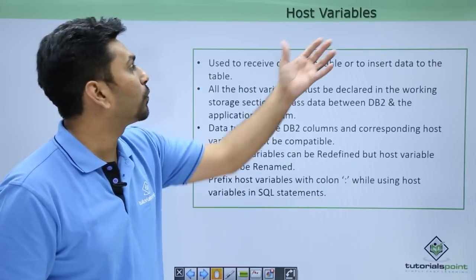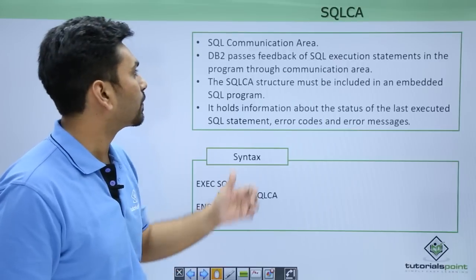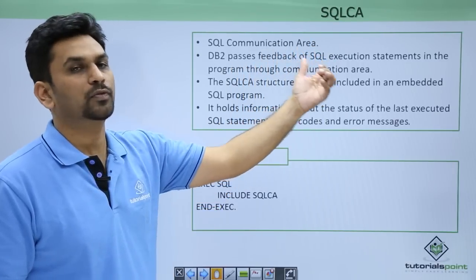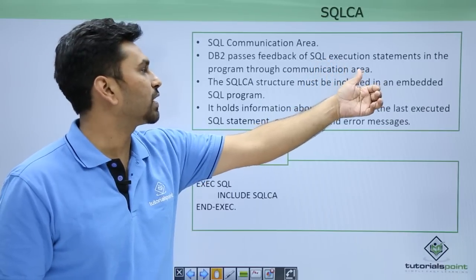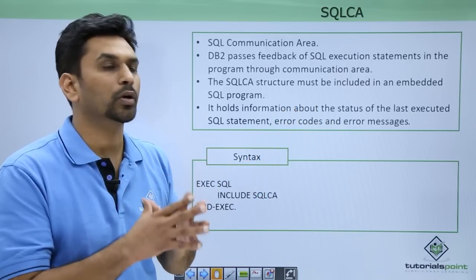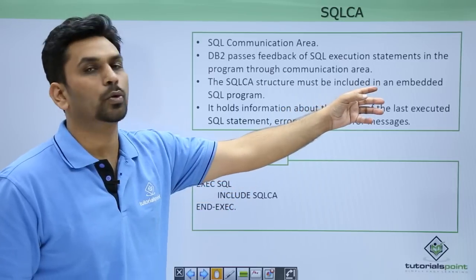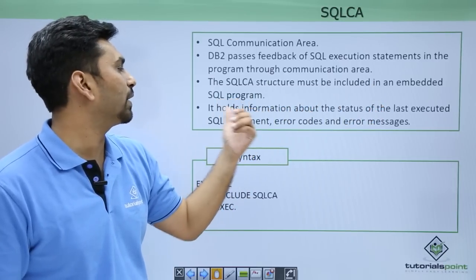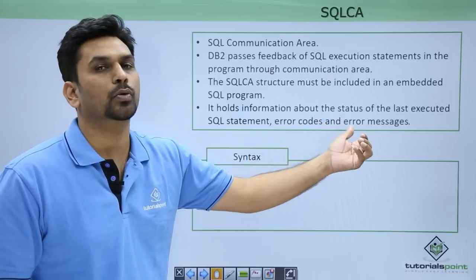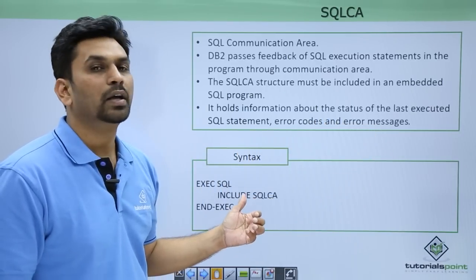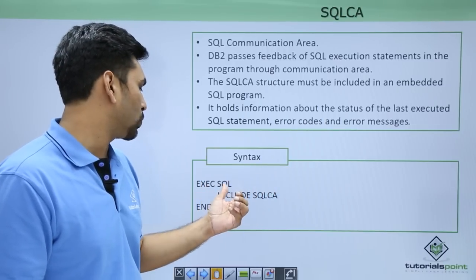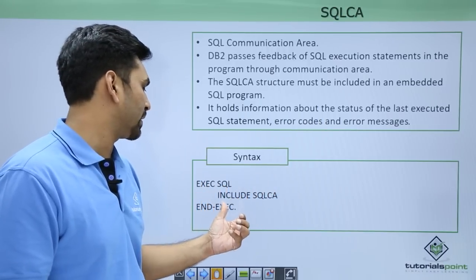SQL CA is the SQL Communication Area. DB2 passes feedback of SQL execution statements in the program through the communication area. You must declare SQL CA in your application program. The SQL CA structure must be included in an embedded SQL program, and it holds information about the status of the last executed SQL statement, error codes, and error messages.